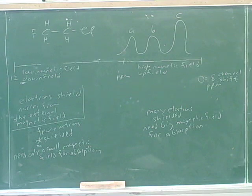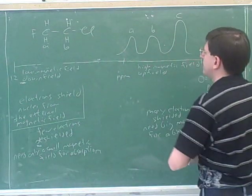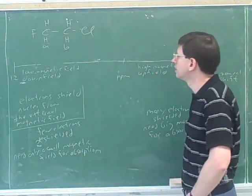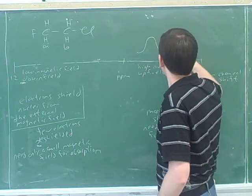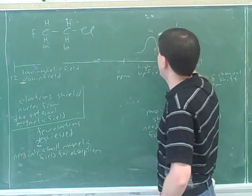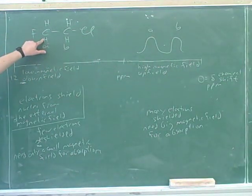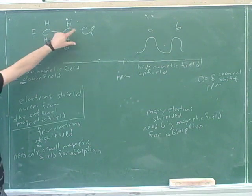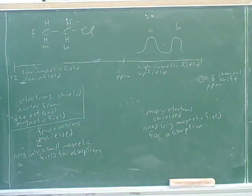How many peaks here? Two. Which peak is going to be further to the left — the A peak or the B peak? Fluorine is the most electronegative, so A. By the way, these should have the same height, because they both represent two hydrogens. So these hydrogens are very close to a fluorine, and these hydrogens are very close to a chlorine. The fluorine has a bigger impact because it's more electronegative — you figured it out.